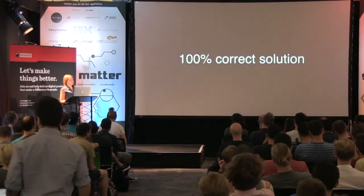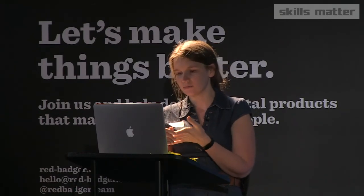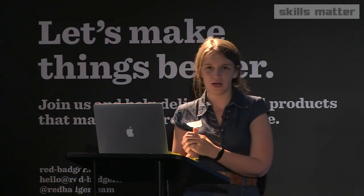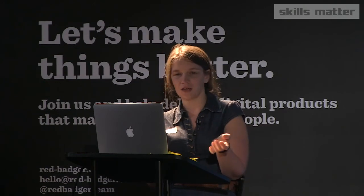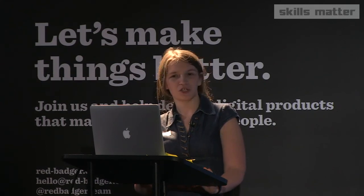My idea here is that there is no 100% correct solution. Everything is different — business logic is different, our React ecosystem in every project is different, the size of the project is very different. And the most scary thing is that we do not know the future. Your application can start with a user list that has five variations, but no one can guarantee it won't be 100 variations in a year — or just one. I'm not here to tell you the correct way to solve this business situation. I'm here to remind you that in such a powerful instrument as JSX, even in its name, there is a reminder that it has the very big magic of JS. Thank you.